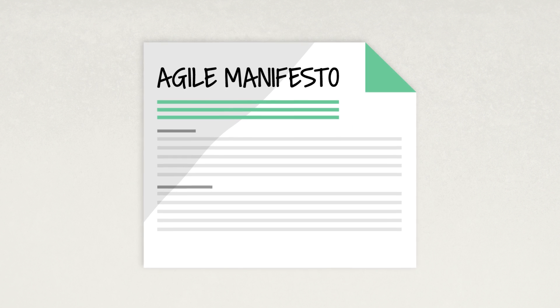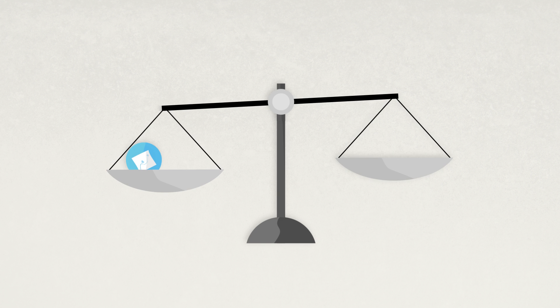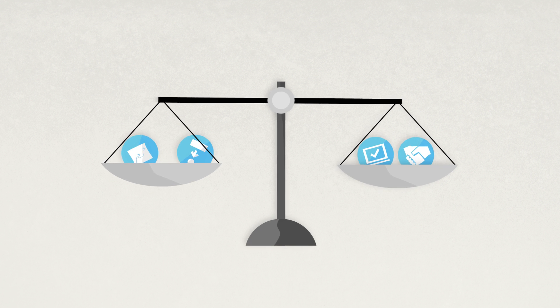But first, it is important to point out that the Agile Manifesto ends by noting that all of the things mentioned are important, just that some things must be prioritized over others. Okay, here we go.